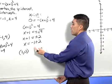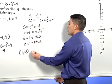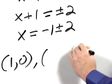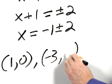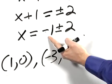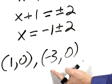Our second is when negative 1 minus 2. So our second x-intercept is the point negative 3, 0, because negative 1 minus 2 is negative 3.